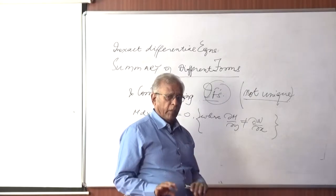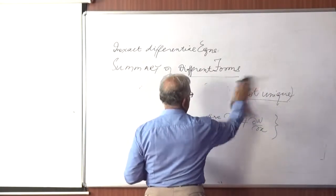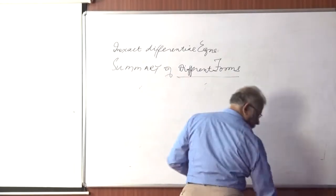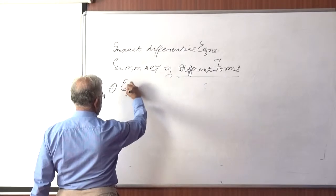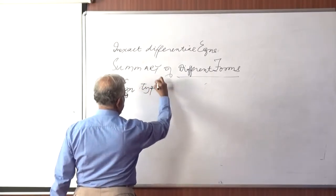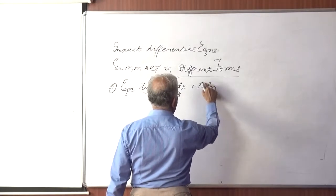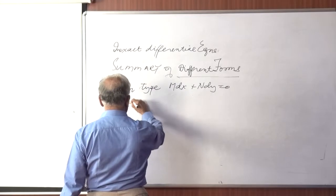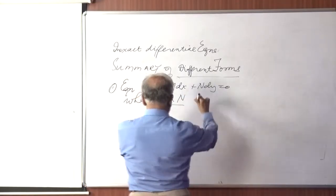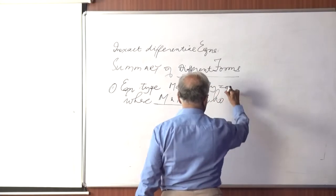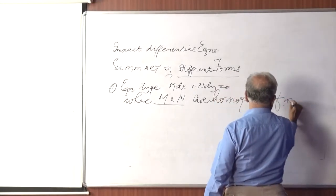So we will go through the forms briefly one by one. Now, first one is equation type: m dx plus n dy equals 0, where m and n are homogeneous functions of the same degree.